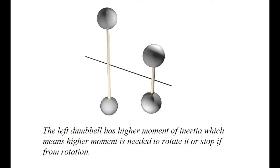This property depends on the axis. For both dumbbells, if we spin them about the vertical y-axis, they will have the same moment of inertia, because both spheres are at the same distance from the y-axis. Moment of inertia is defined about an axis and varies depending on which axis we choose. Also, mass is not the only factor — the distance between masses also matters.